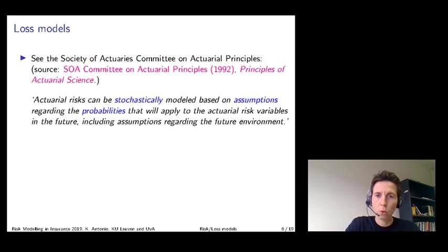According to the principles of actuarial science, actuarial risks can be stochastically modeled based on assumptions regarding the probabilities that will apply to the actuarial risk variables in the future, including assumptions regarding the future environment.